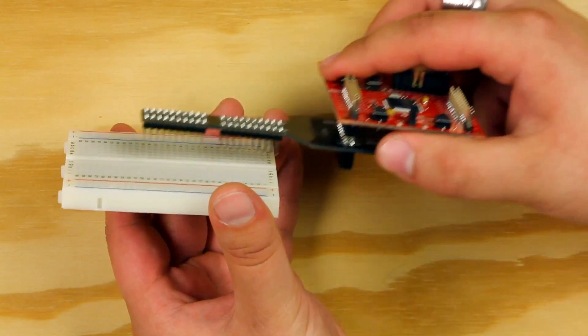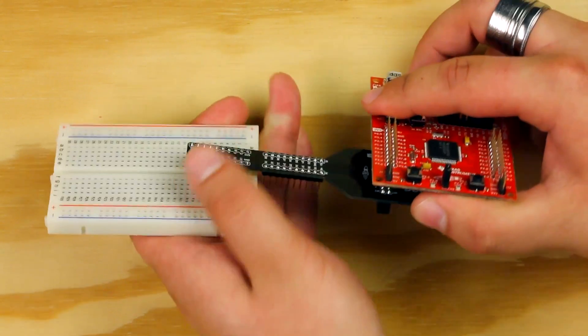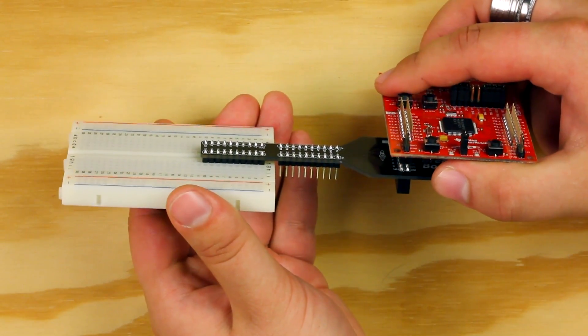You can use either the 20 pin or 40 pin headers. All the example circuits utilize the first 20 pins, which gives us more space to work with on the breadboard.